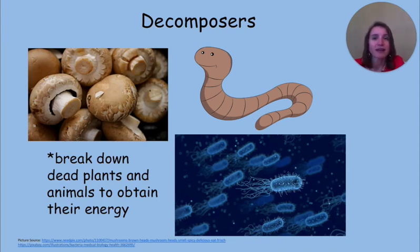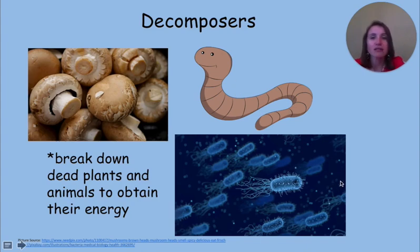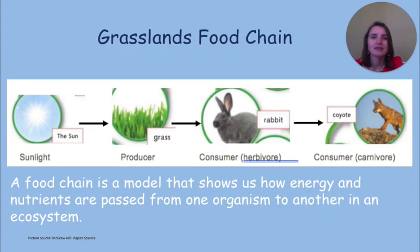Decomposers obtain their energy by breaking down dead plants and animals into nutrients. The nutrients usually remain in the soil where they can be later used by other organisms. Mushrooms, worms, and bacteria are all examples of decomposers. Producers, consumers, and decomposers are all parts of a food chain. A food chain is a model that shows us how energy and nutrients are passed from one organism to another in an ecosystem.